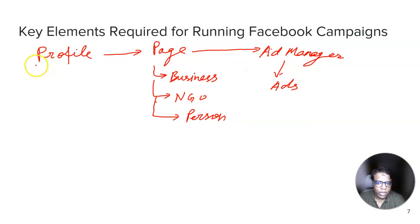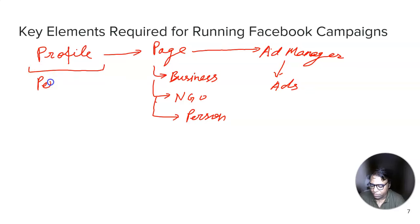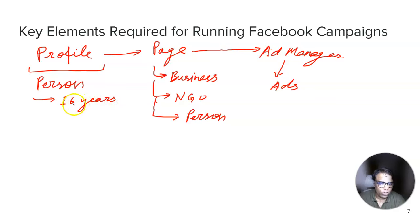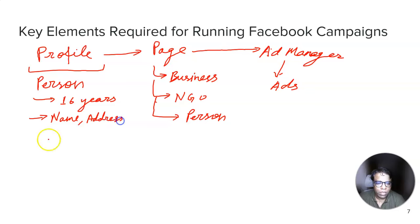We need to keep in mind that if you are going to run a campaign for a brand and they don't have a profile, it will take some time before you run the campaign. The profile cannot be of a business — it should be of a person, and that person should be more than 16 years of age. In some countries it's also 18. All the details you fill in for the profile, such as name, address, and mobile number, should be real, because if the mobile number is false, it will send an OTP and the profile will get rejected.